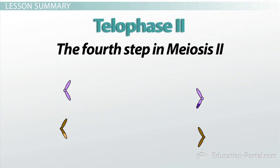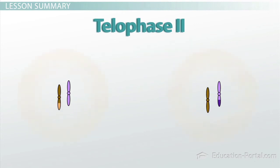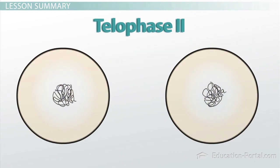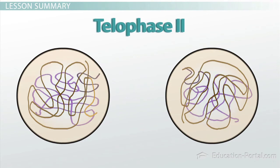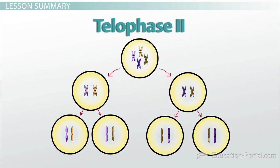Telophase II is the fourth and final step of meiosis II. During telophase II, the nuclear membrane reforms and the chromosomes decondense. The cytokinesis which follows meiosis II establishes four gametes with different genetic content.